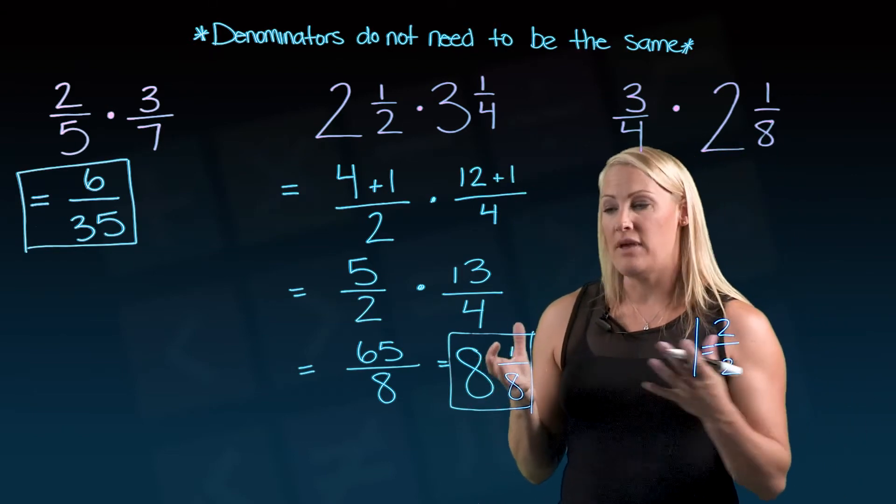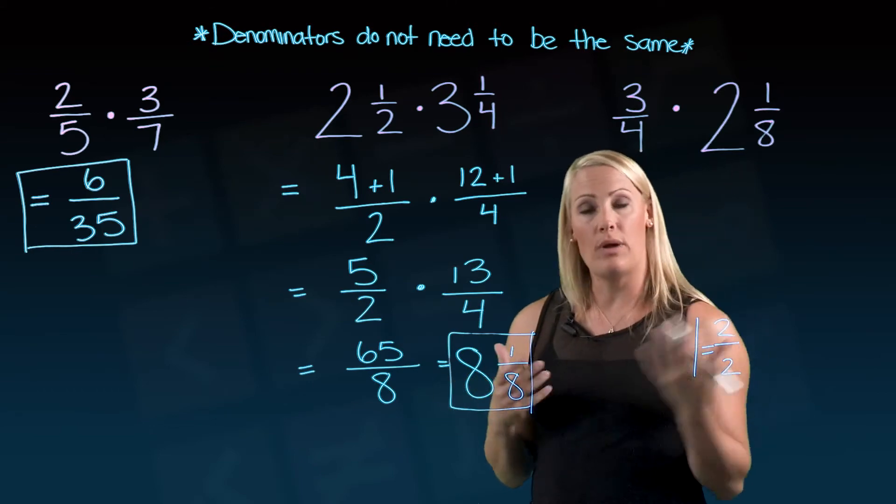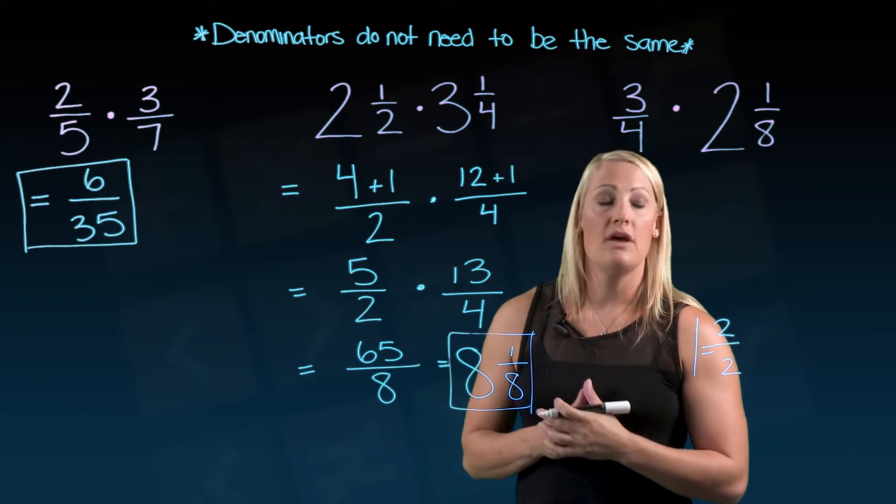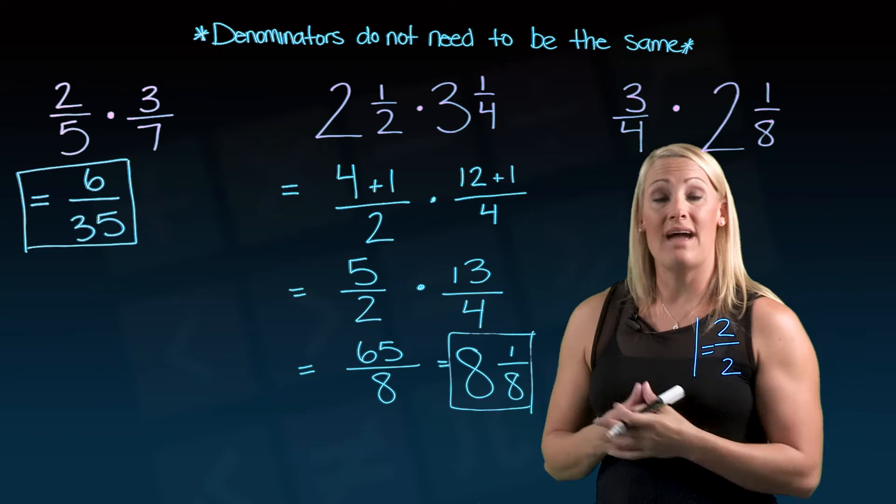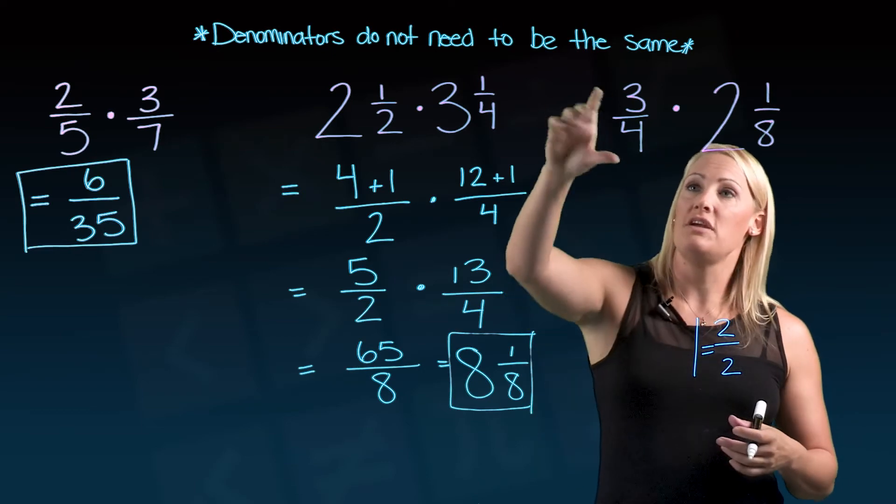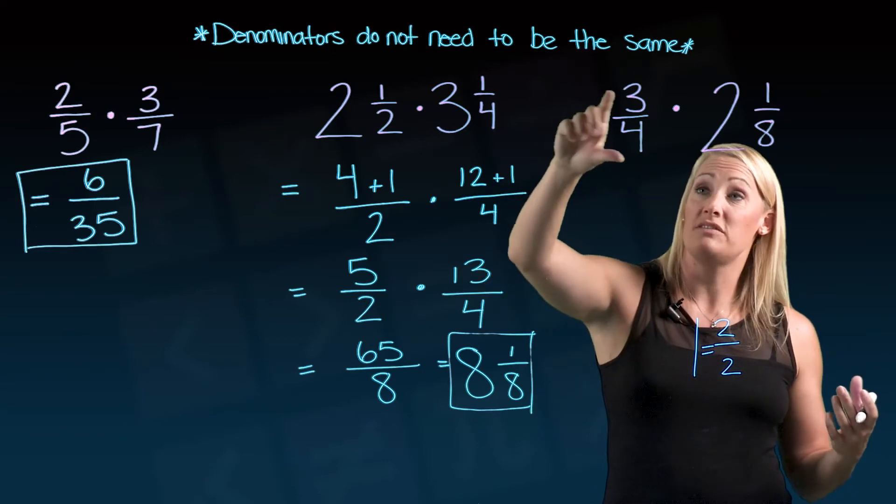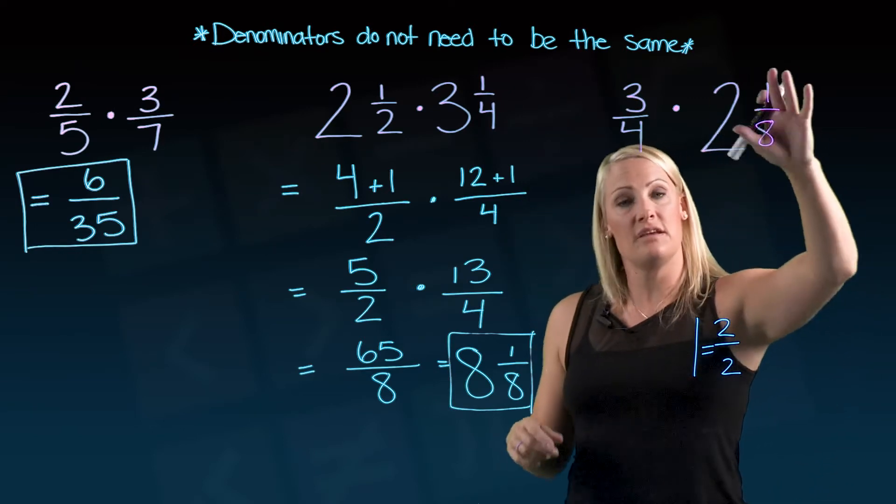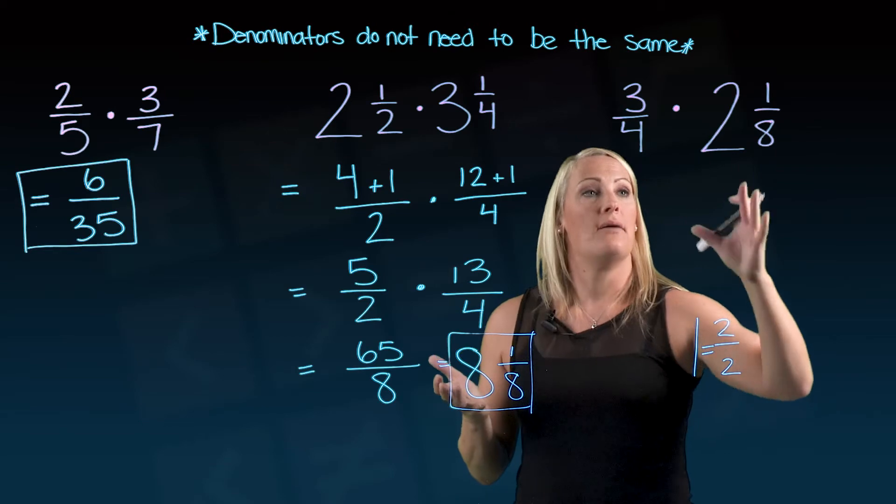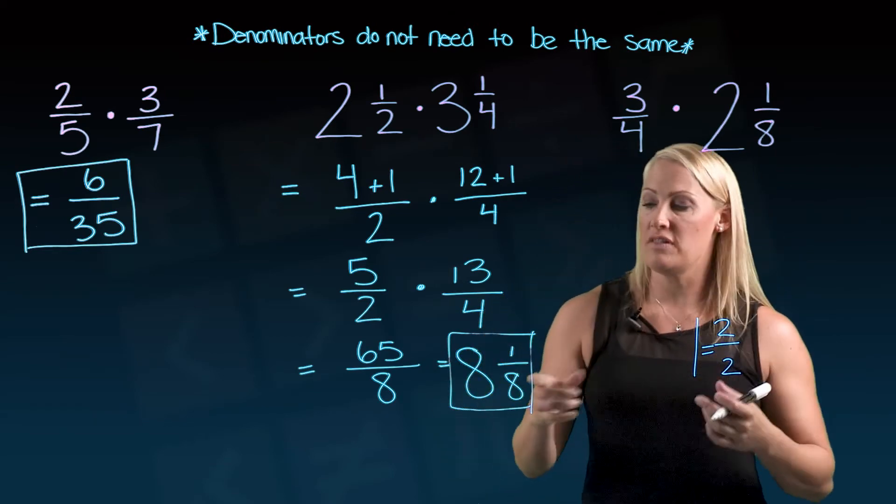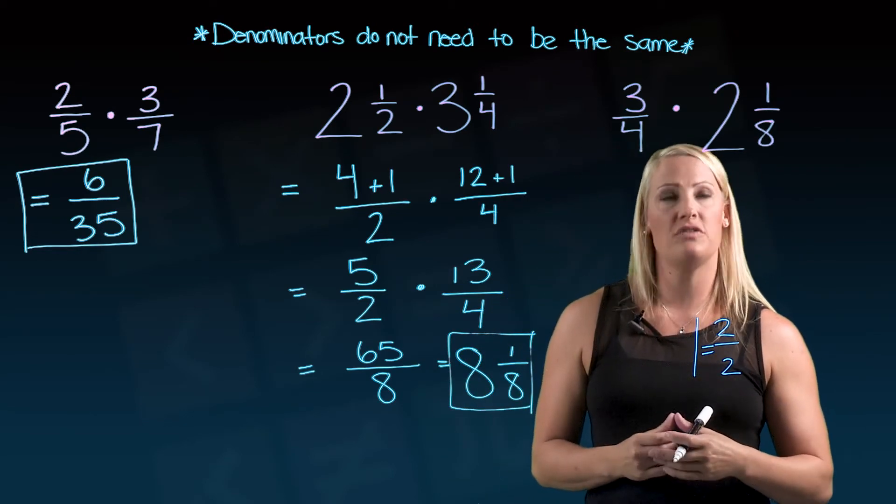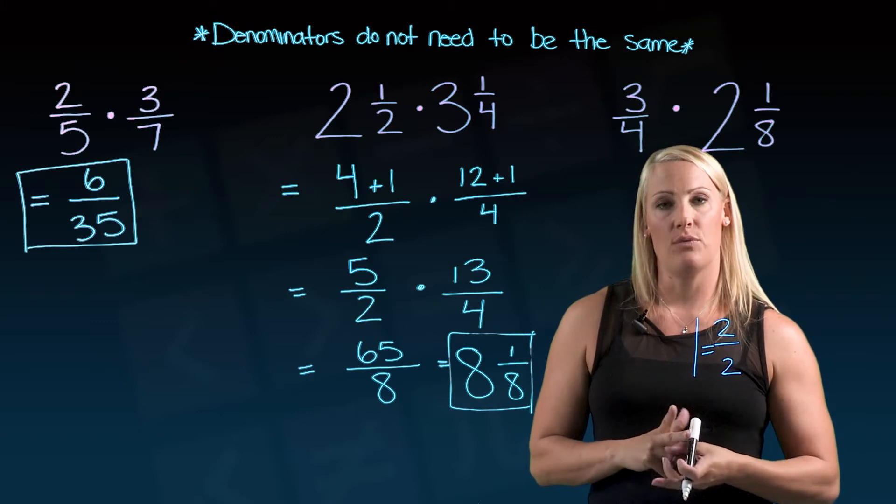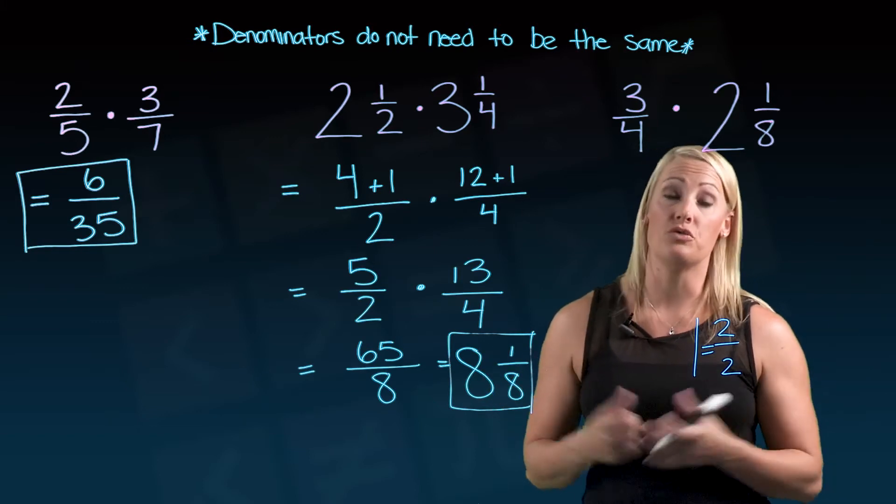So hopefully that makes sense. You need to make those into improper fractions before you multiply them. So why don't you take a minute, try that guy on your own. You can see here that this guy is actually not a mixed number. It's just a fraction. So you don't have to do anything to that one. But for this one, take a minute and make this into an improper fraction. Multiply them across. Get your solution. And then try and see if you can maybe reduce it if it needs it. And I will come back in a minute and go through the solution with you.